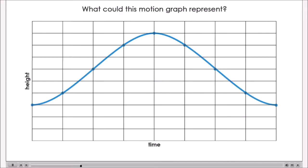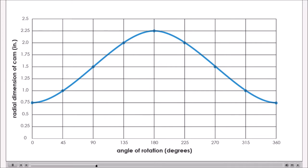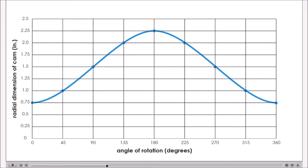Once you have identified and graphically modeled the motion you would like to replicate, how do you design a cam to imitate that motion in an automata? Let's look at an example motion graph. Perhaps this motion graph could represent the bobbing of a boat on gentle waves or the rising and setting of the sun. This graph represents the motion resulting from a cam designed to replicate that motion. Note that the horizontal axis (x-axis) now represents the angle of rotation instead of time, and the vertical axis (y-axis) represents the radial dimension of the cam with a scale.